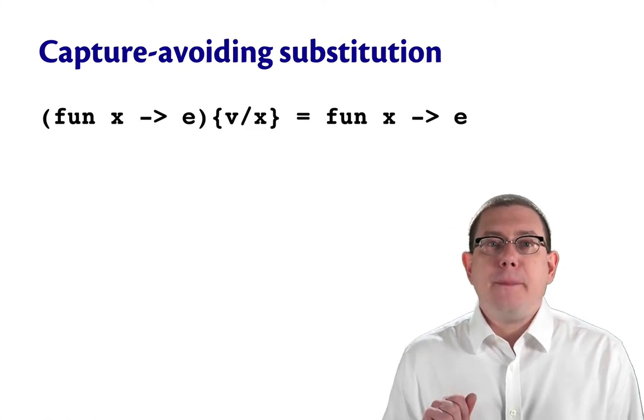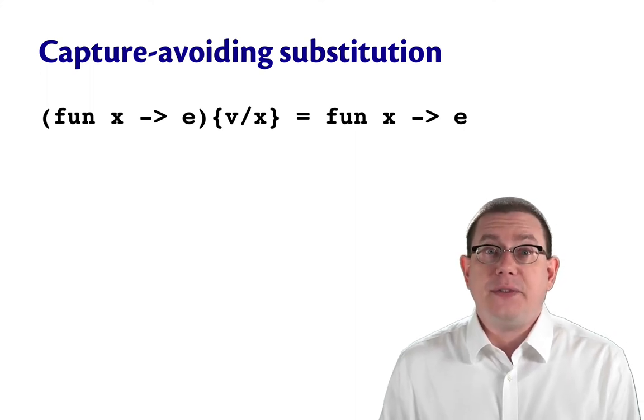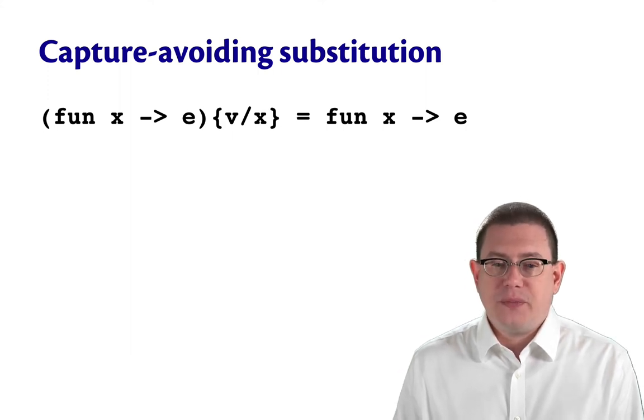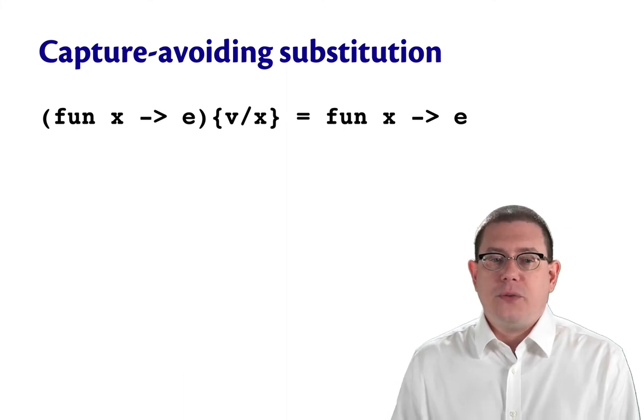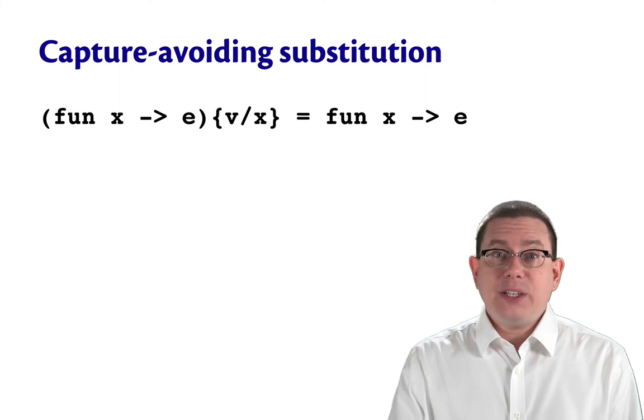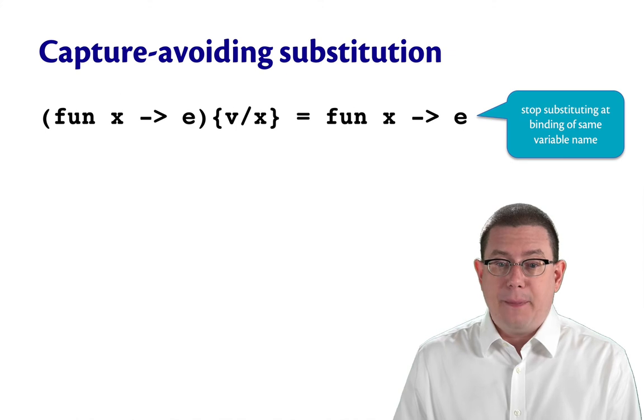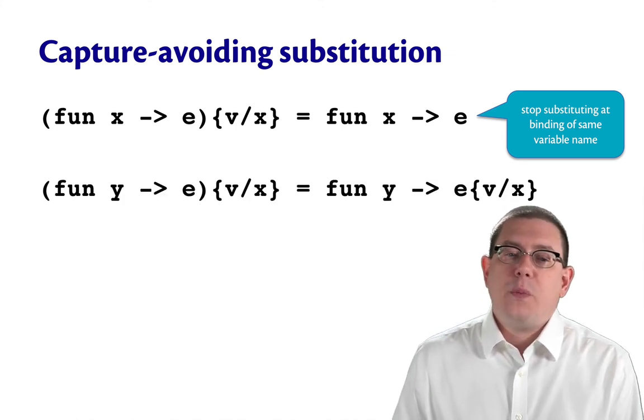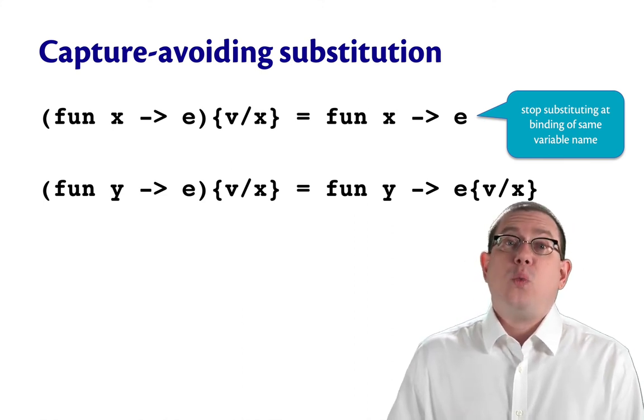So we need an improved definition of substitution that avoids doing this kind of variable capture. It's called capture avoiding substitution. Here's the definition of it. When we do a substitution inside of a function fun x arrow e of v for x, then as we've seen already, we go ahead and stop substituting at a binding of the same variable. That's the same as we've always seen.